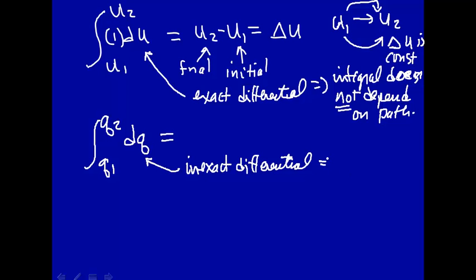An inexact differential implies that the integral does depend on path. So, for instance, if you go from the initial state to a final state, actually this is technically incorrect. If somebody, say a calculus teacher, were looking at this, he or she would cringe. Just let me say this is the initial and this is the final. So the initial to final state depends on which way you go.